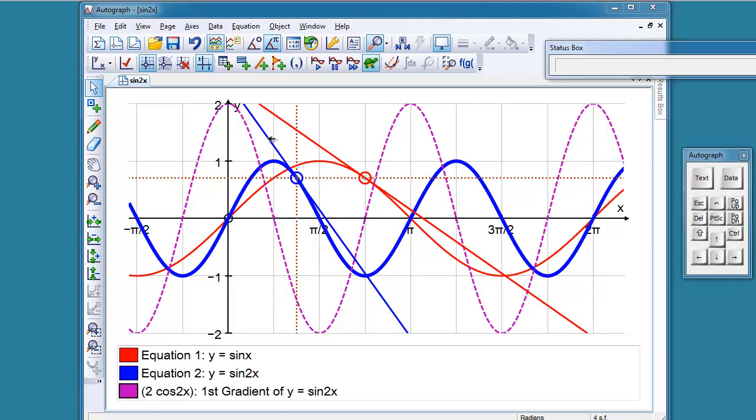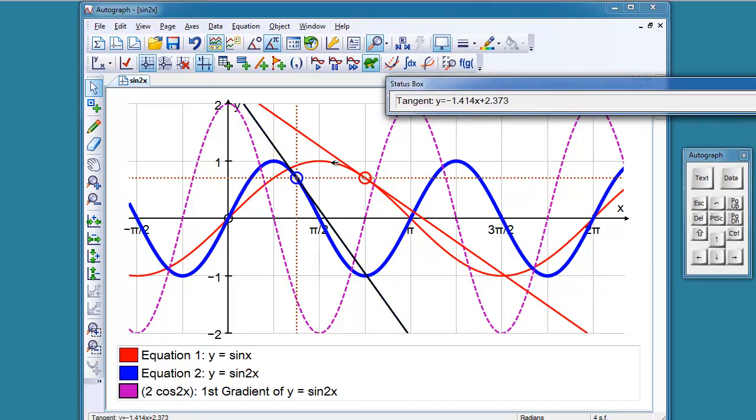We can just check that for a second if we have a look at this gradient here. The tangent is minus root 2 and the gradient here should be half of that which is indeed minus 1 over root 2. We also have a look at the actual gradient function of y equals sine 2x which is 2 cosine of 2x.